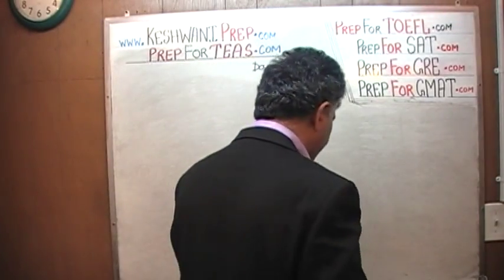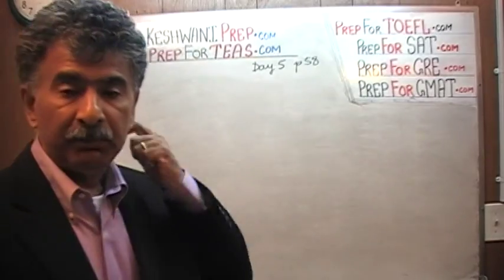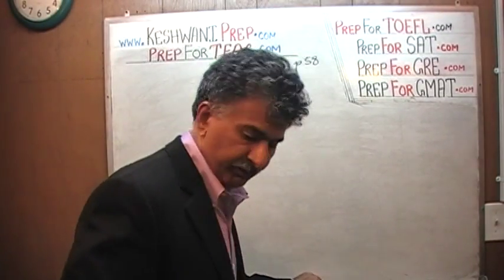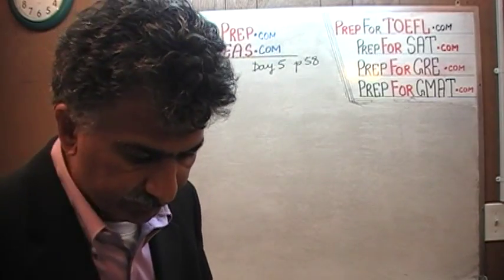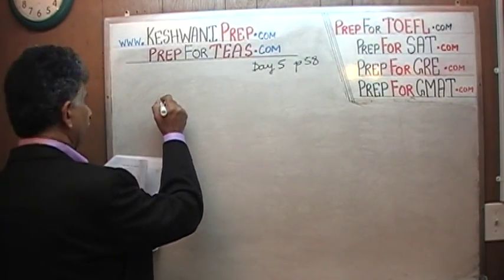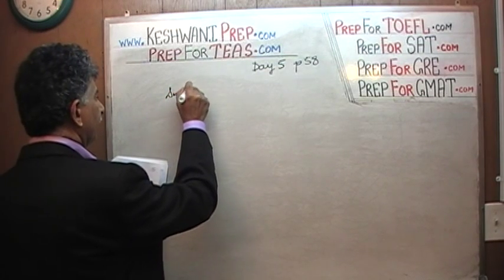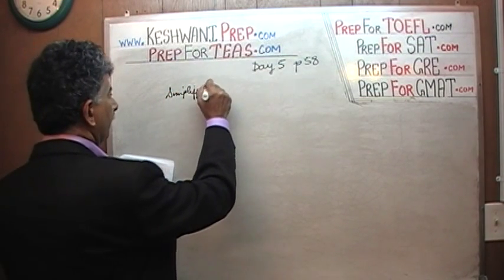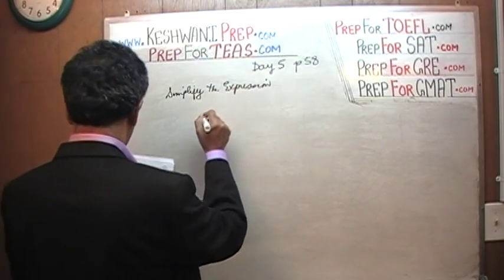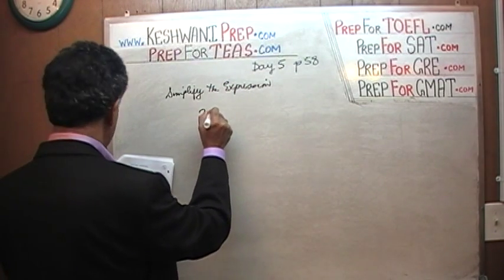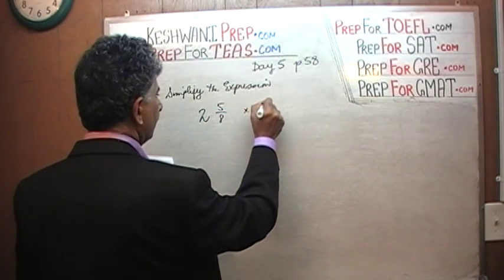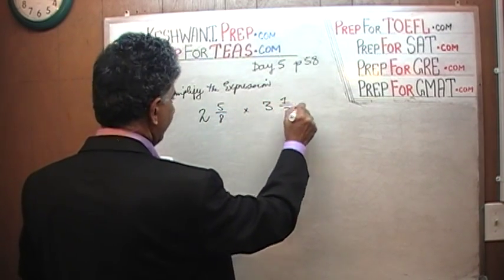Today we will deal with the notion of multiplying and dividing fractions. Let's take a look. The very first problem on page number 58 is example 2.8. It simply says: simplify the expression. And the expression is 2 and 5/8 times 3 and 1/7.